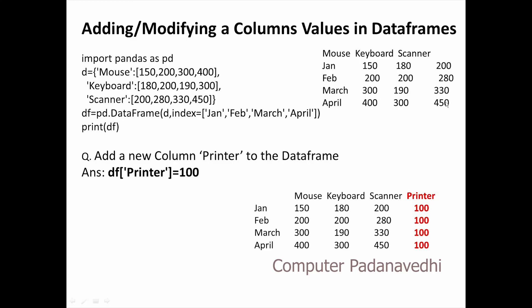Now, we will add a small column. We will add a new column to the DataFrame. df['printer'] is equal to 100.